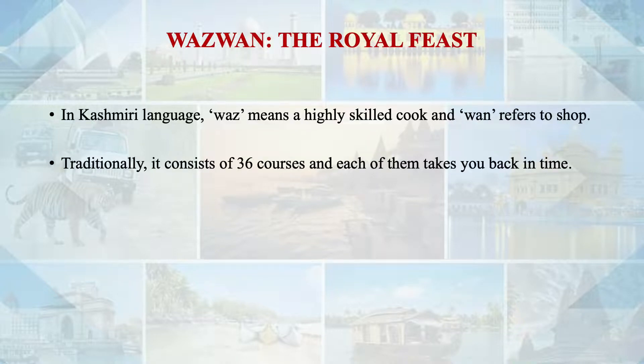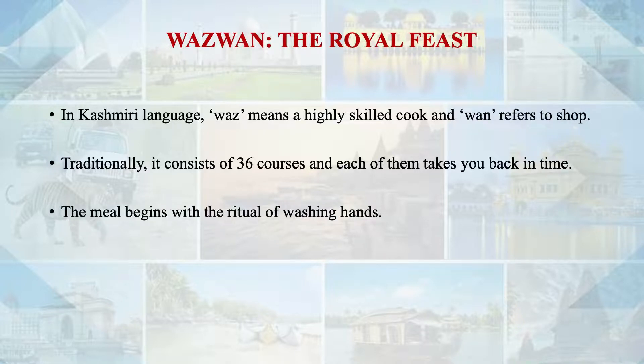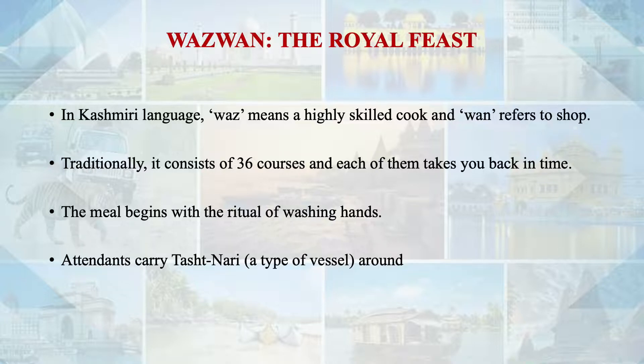Traditionally it consists of 36 courses which evolved over a period of time through various traditions. The meal begins with the ritual of washing hands, then attendants carry a taksh nehari, a type of vessel, around for the convenience of guests. The meal is served in four groups: kebabs, spice curries and other dishes cooked as part of the entire feast. The variety of food is excellent and the meal ends on a sweet note with firni along with kahaba, a green tea flavored with spices and slivered almonds.